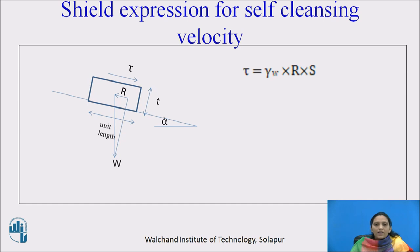Tau is density of water into R into S, where gamma W is the density of water, R is the hydraulic mean radius, and S is the slope of sewer.